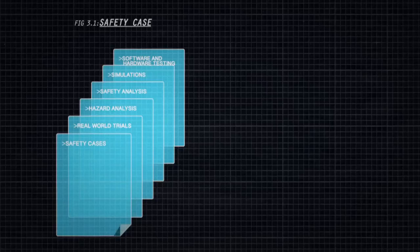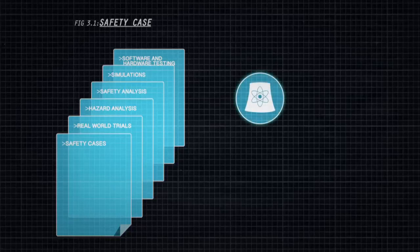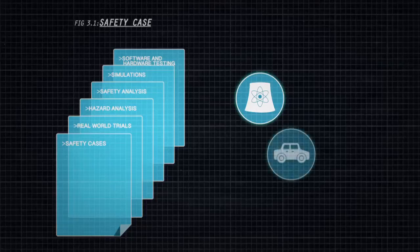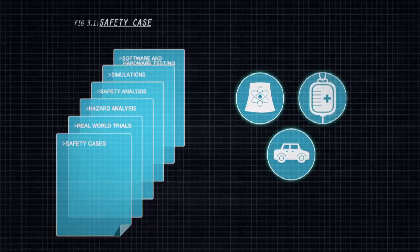The role of a safety case is to present a compelling argument based upon the available evidence that a system is acceptably safe to operate in a given context. From its roots in the nuclear industry, the use of safety cases has become a widespread approach to the regulation of safety-critical systems in many industry sectors, from automotive to medical devices and air traffic management.